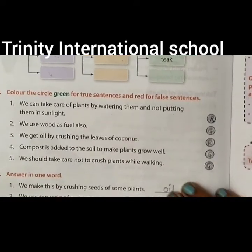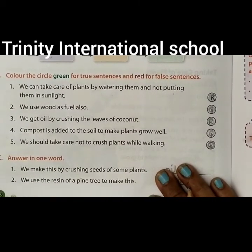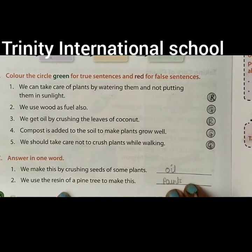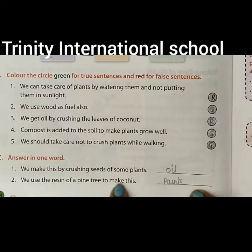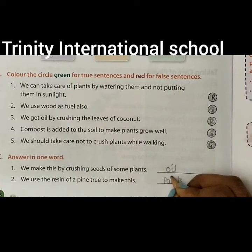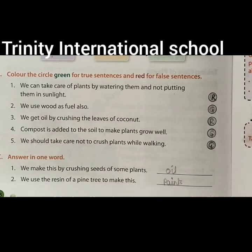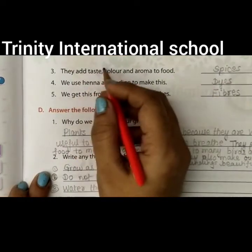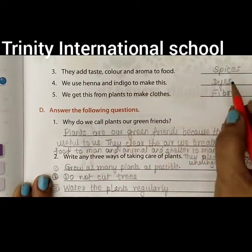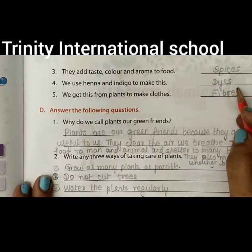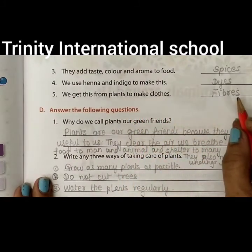Now answer in one word. We make this by crushing seeds of some plants — the answer is oil. We use the resin of pine plants to make this — the answer is paints. They add taste, color, and aroma to food — spices. We use henna and indigo to make these — dyes. We get this from plants to make clothes — fibers.